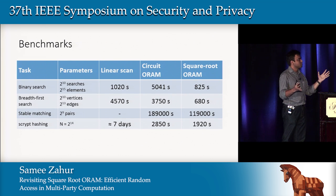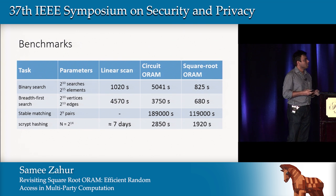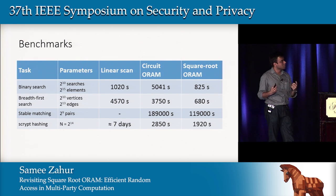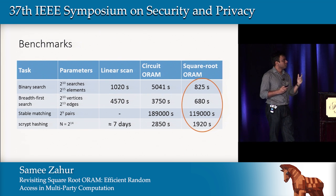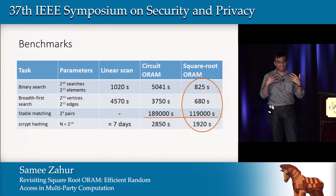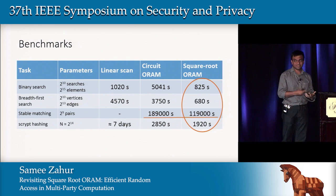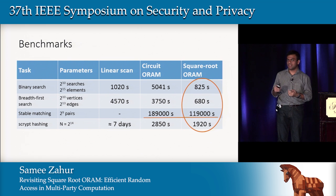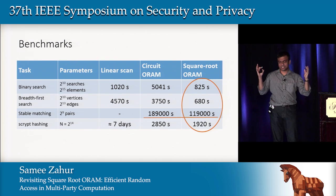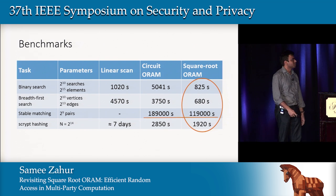Here are sample benchmarks for various data sizes. For binary search, we count the initialization cost — which other papers often don't — and for most cases ours is actually better. For stable matching, this is a naive Wikipedia implementation; if you want custom algorithms you can do much better. I believe a 40x faster algorithm will be presented at the poster session. We also tested scrypt, which is a hash function that does lots of unpredictable random access.